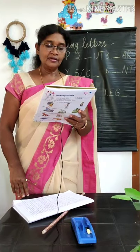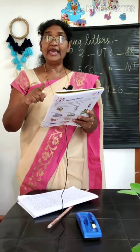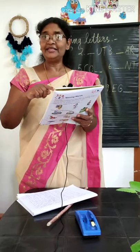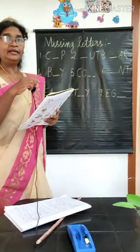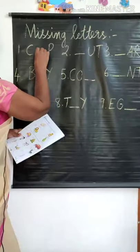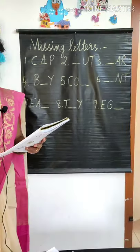See the picture. What is it? CAP. C, dash, P — which is the missing letter? A. All of you write in capital letter A.